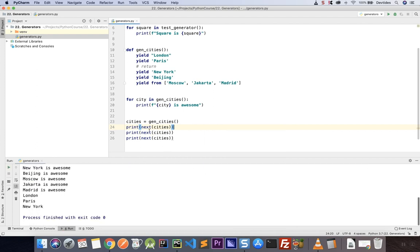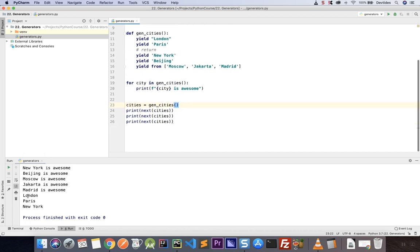So let me undo that. And if we run it like that, we are passing next, next, next to the same instance of the function, not two separate ones. So that's why we can access individual elements like that.